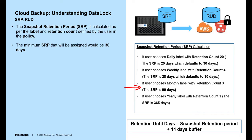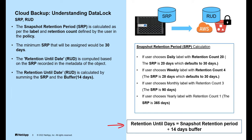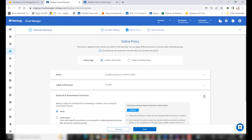Now let's understand how the retention until date, which is stamped on the cloud object, is computed. It is computed based on the snapshot retention period recorded in the metadata of the object. The retention until date is calculated by summing the snapshot retention period and a buffer which is set as 14 days.